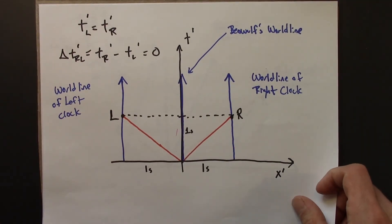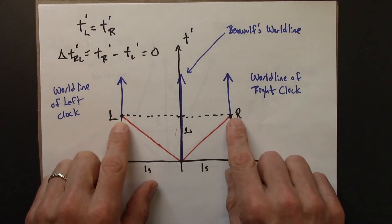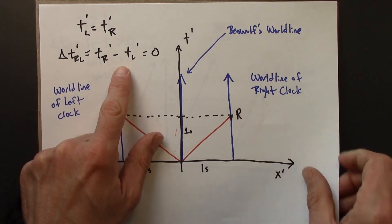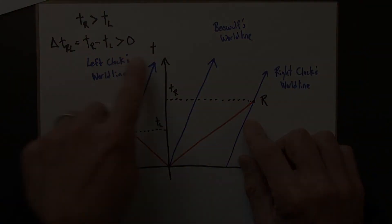So again, Beowulf would look at these two times and say they happen at the same time. And so the time interval is zero. Anastasia does not agree and says that these times, that the time between these events is greater than zero. This happens after that one.